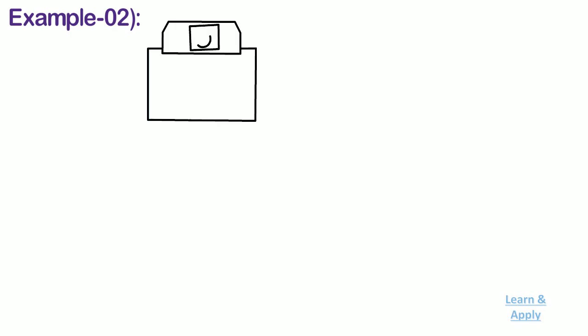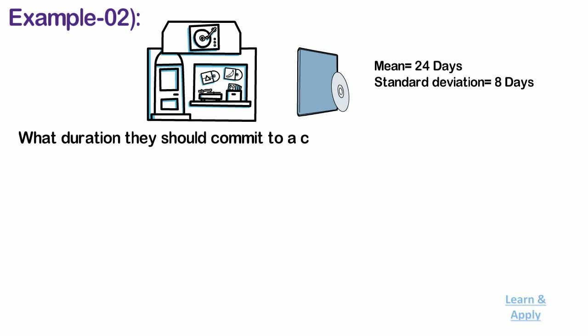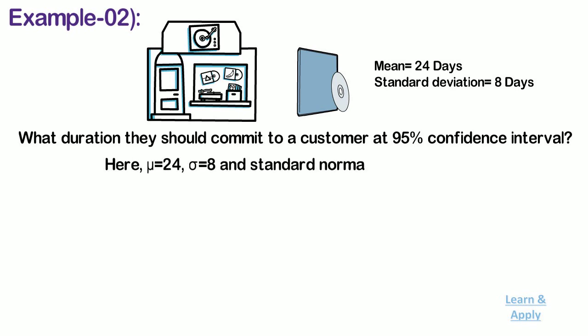Example 2: A company has realized that they can develop a new part with a mean of 24 days and a standard deviation of 8 days. Assuming normal distribution, what duration should they commit to a customer at 95% confidence interval? Here, mu equals 24, sigma equals 8, and standard normal probability equals 0.95.